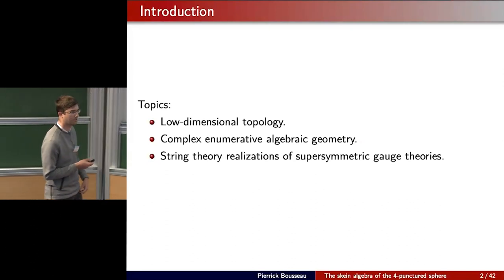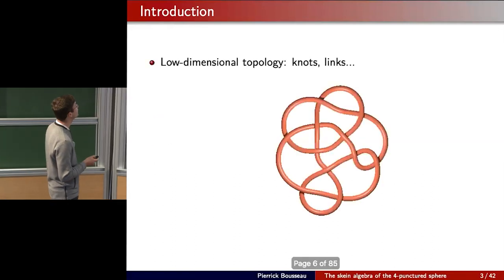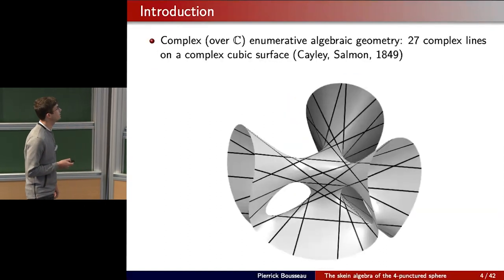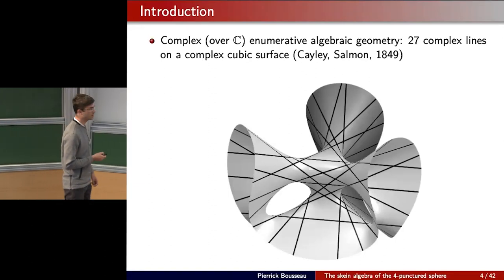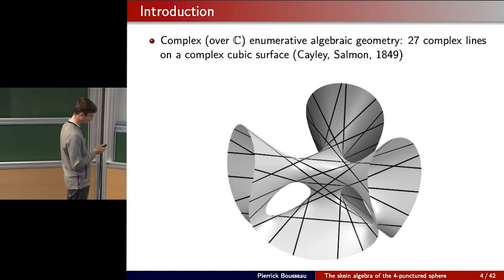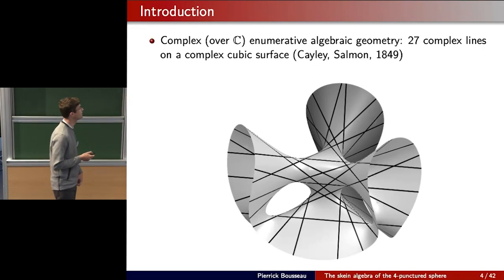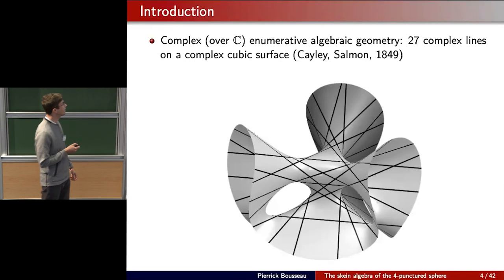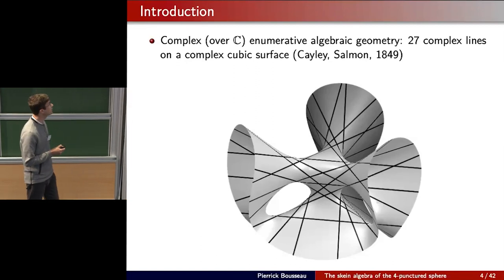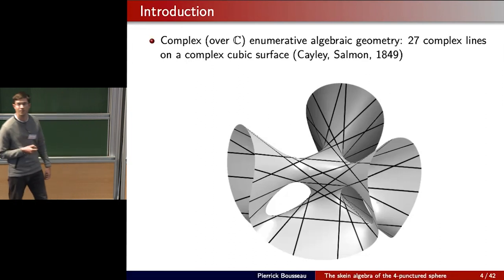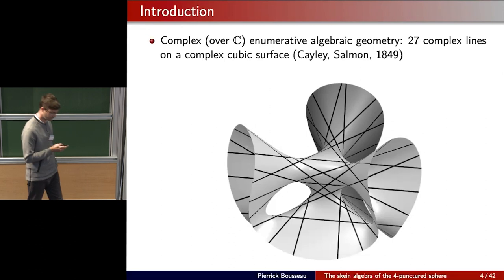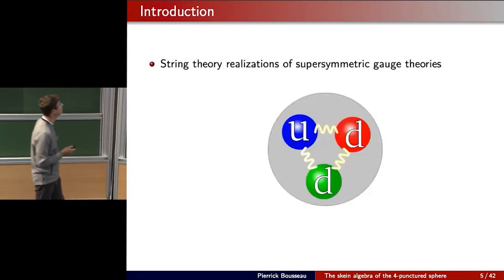In low-dimensional topology we'll be talking about knots, links, and related objects. In complex enumerative algebraic geometry we'll be interested in counting configurations of geometric objects satisfying various constraints. A well-known example going back to the middle of the 19th century is the fact that there are 27 lines on a complex cubic surface in P3. This talk will be about the cubic surface, and this fact about 27 lines will appear later.